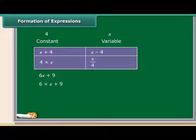First, multiply variable X with constant 6, then add a constant 9 to the product. Similarly, 14Y minus 30 is obtained by first multiplying Y by 14 and then subtracting 30 from the product.